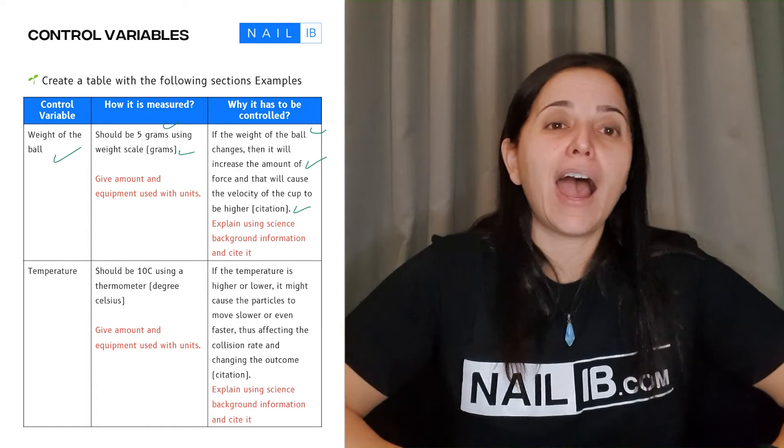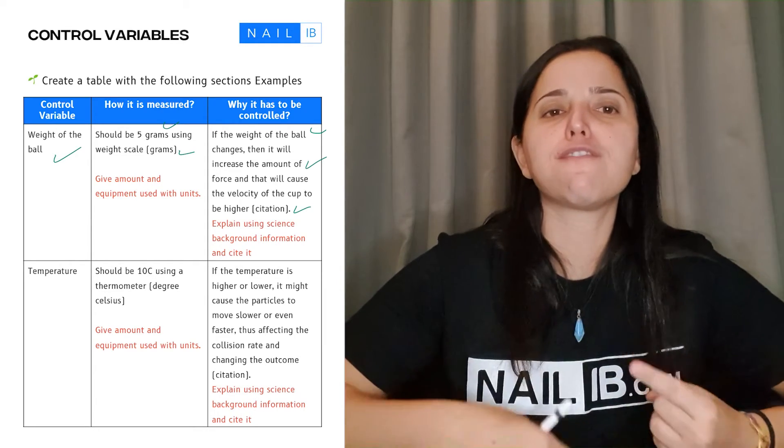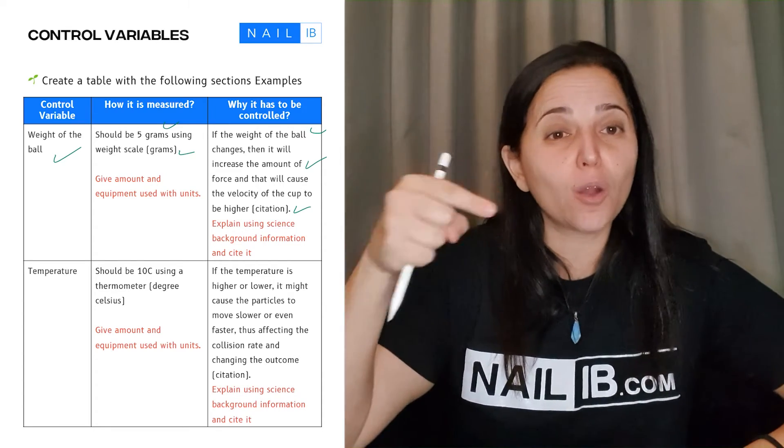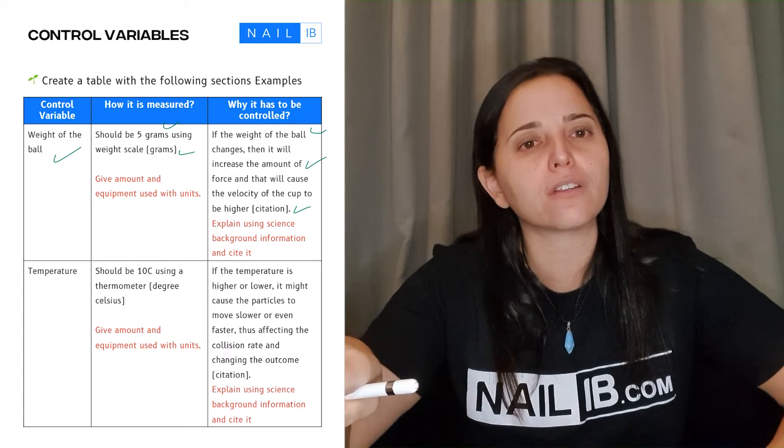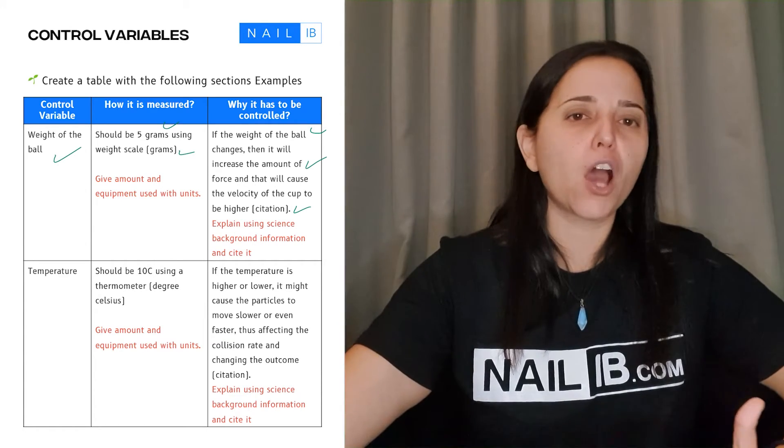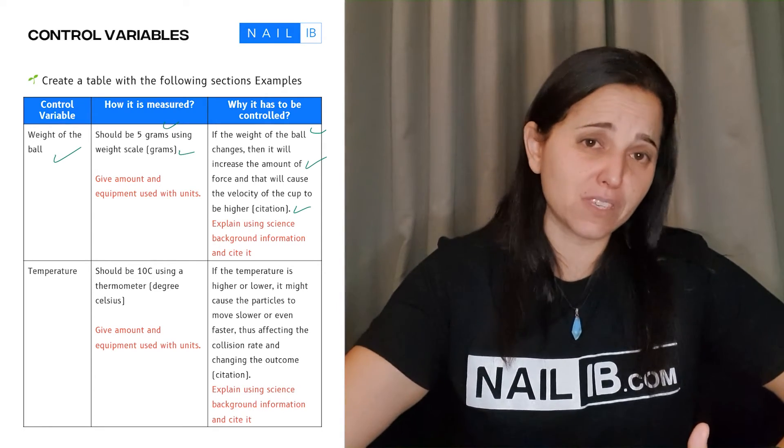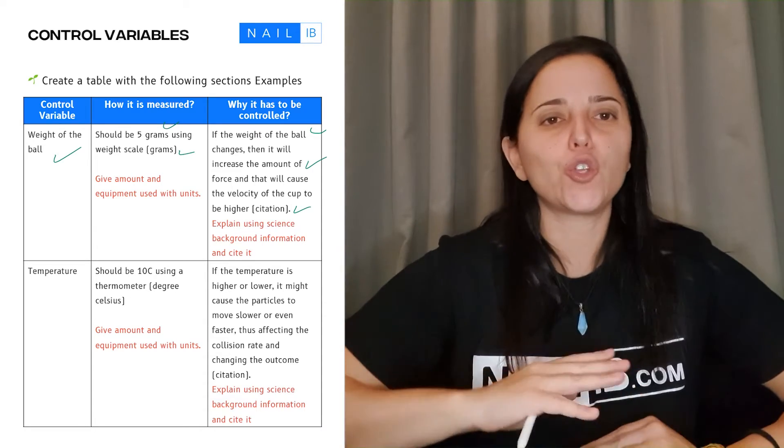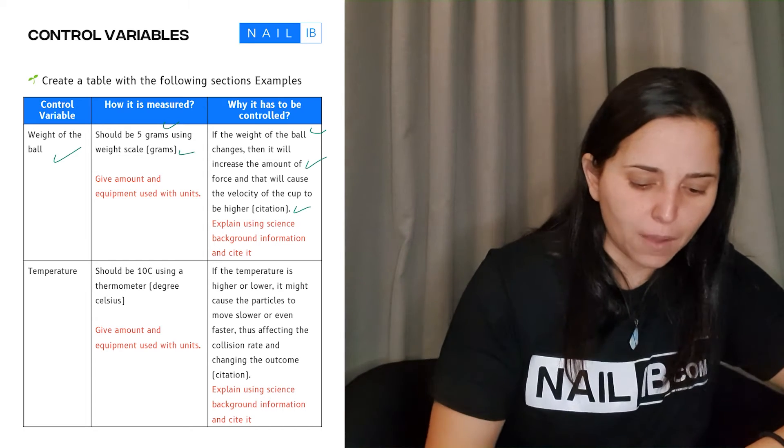See, if you notice here, we said that changing the weight or the mass caused the force to change, and that force caused the whole velocity to change. So there was an explanation. It was more physics, but it was still an explanation. So we explain the biological, chemical, or physical explanation - the reasons why you want to keep it the same. If you keep writing 'because if you change it, it will change the result,' you're not getting points for it. You're basically not explaining.